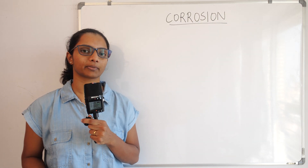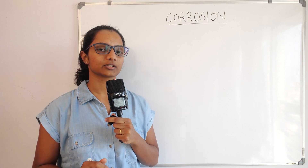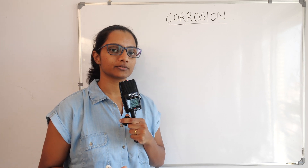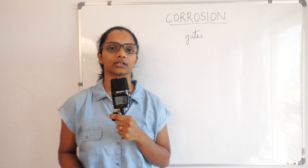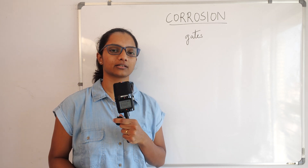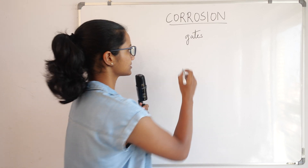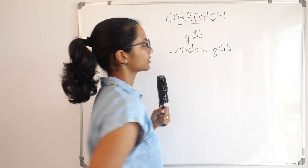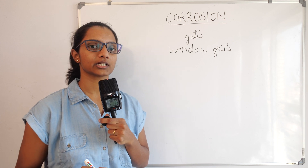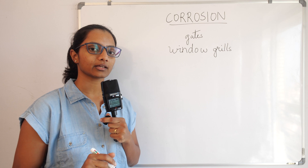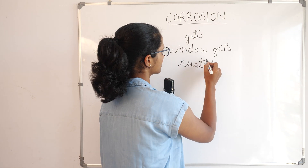This is a very interesting topic. Before I start, I'd like to give small examples for you all to understand. If you have observed the gates in your school, they are painted. Also, the window grills in your classrooms are painted. The reason is that these metals get corroded — iron gates and window grills are made of iron and they get rusted.